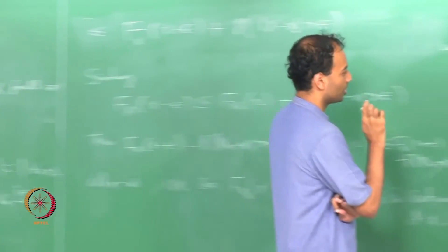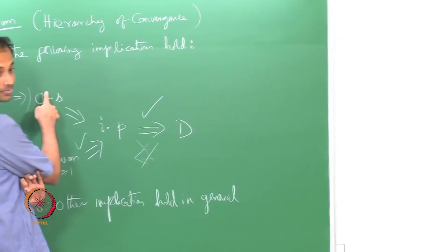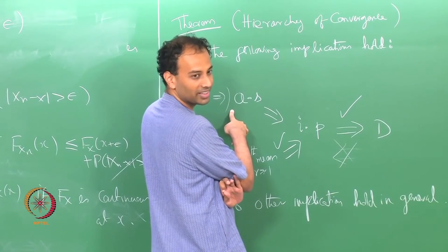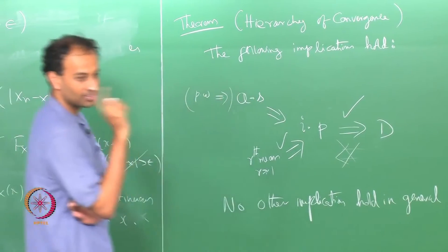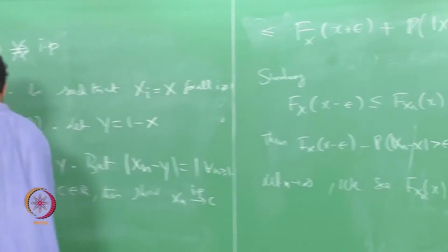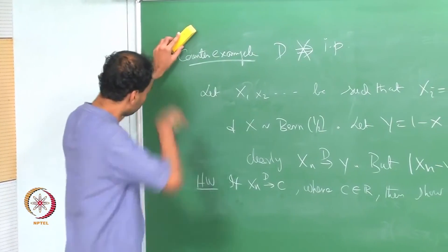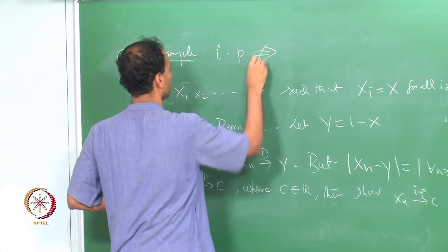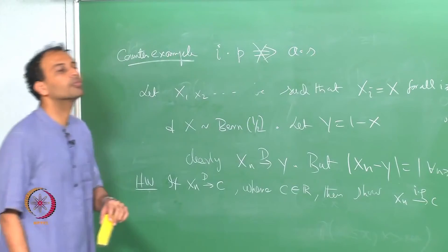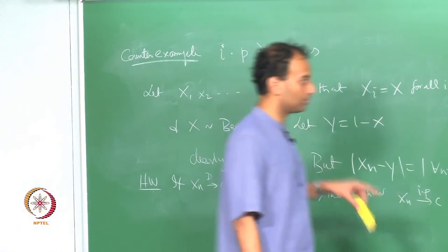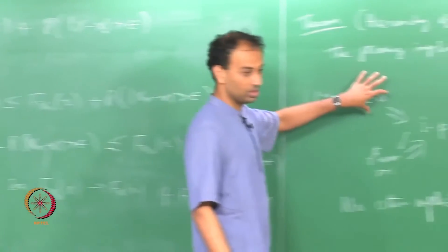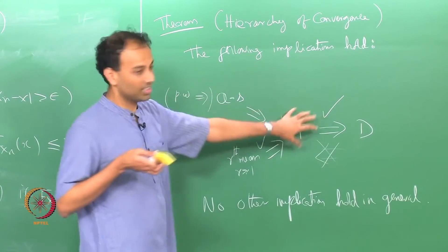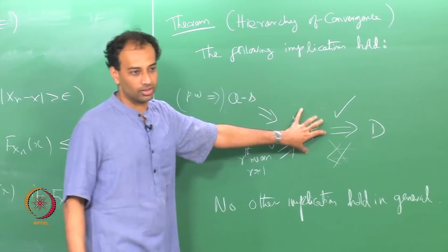In about 10 minutes we can do the counter-example to prove that convergence in probability does not imply almost sure convergence — probably the most intriguing example. We will do this today; tomorrow a major theorem will be proven, and a corollary will be that almost sure convergence implies convergence in probability.